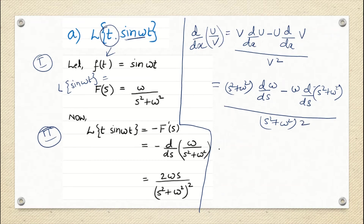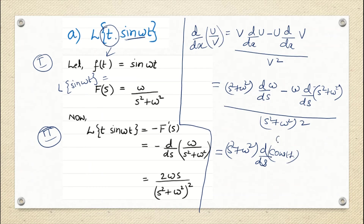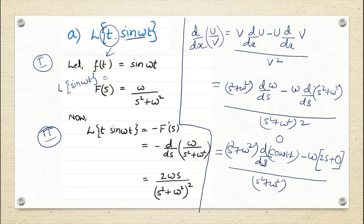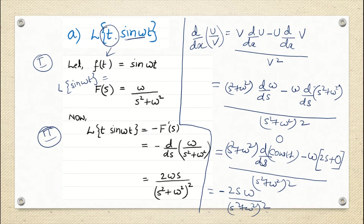We know d/ds of ω, since ω is constant, gives 0, so the first term becomes 0. Then minus ω times d/ds of s² gives 2s, and d/ds of ω² (constant) is 0, divided by (s² + ω²)². So the numerator becomes minus 2sω divided by (s² + ω²)². With the outer negative sign, minus times minus becomes plus, giving the final answer: 2ωs by (s² + ω²)².